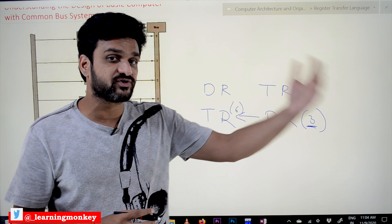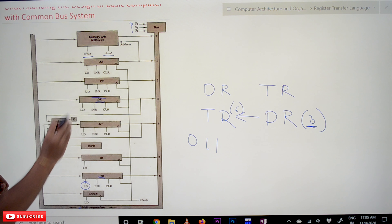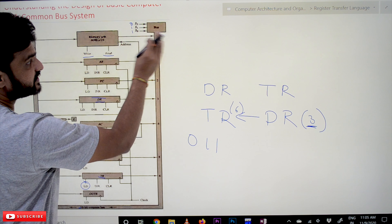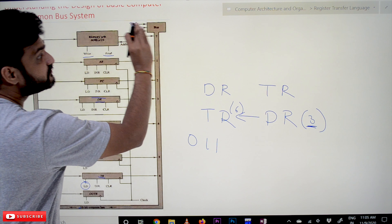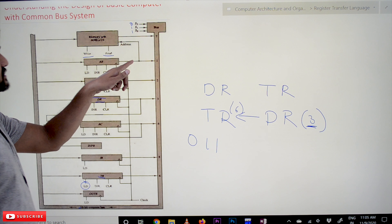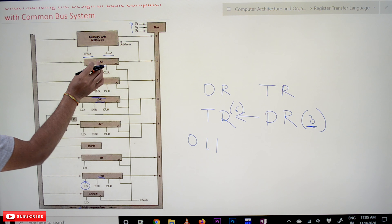The memory unit's output is connected to the bus, and the bus lines are also connected to the input of the memory unit. The memory unit is provided with write and read inputs. Whenever the write input is activated, the data on the bus gets stored into memory. Whenever the read input is activated, the content of the memory unit is transferred onto the bus. The address register's output is connected to the memory unit.